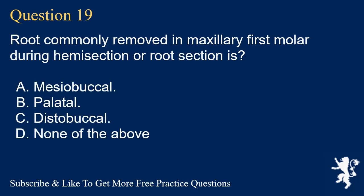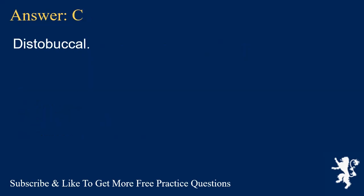Question 19. Root commonly removed in maxillary first molar during hemisection or root resection is? A. Mesiobuccal. B. Palatal. C. Distobuccal. D. None of the above. Answer: C. Distobuccal.